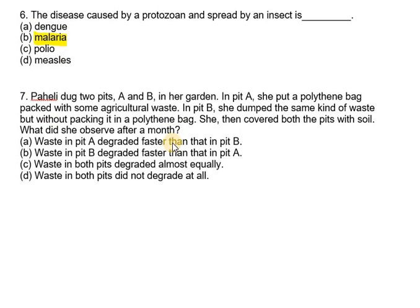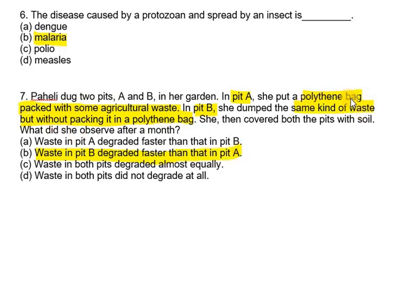Question number seven says: Pahali dug two pits A and B in her garden. In pit A, she put a polythene bag packed with some agricultural waste. In pit B, she dumped the same kind of waste but without packing it in a polythene bag. She then covered both the pits with soil. What did she observe after a month? The answer is that waste in pit B degraded faster than in pit A, because pit A has a polythene bag in it, so there will be less degradation compared to pit B.